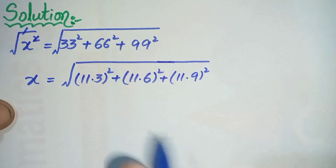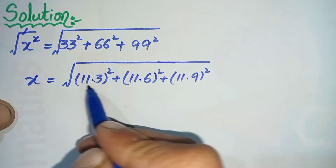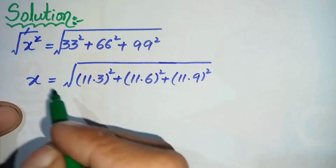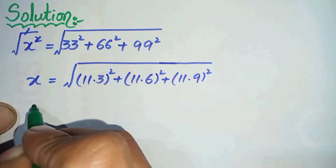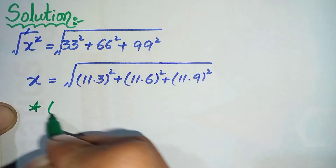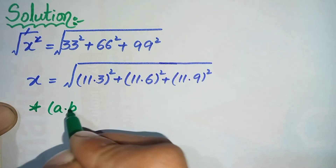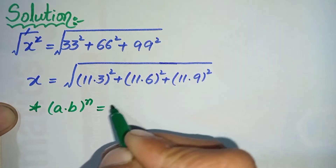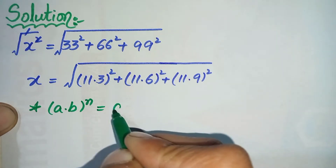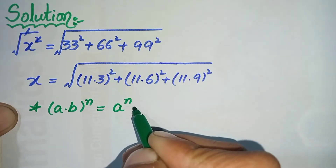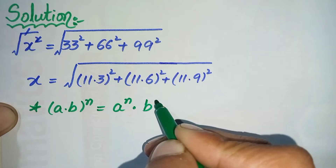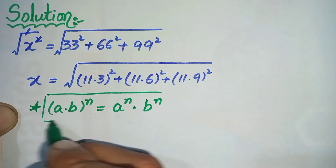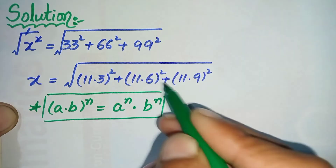In the next step I will split this power on both the bases using an exponential math formula. We will use the formula: (a times b) raised to power n can also be written as a raised to power n times b raised to power n.